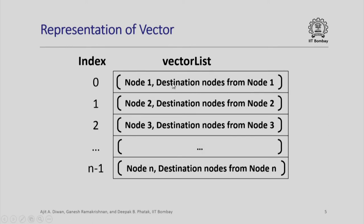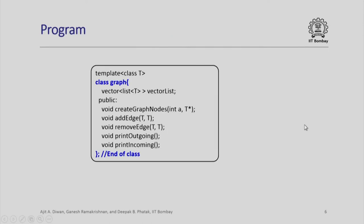Now, what should be contained in each list is very important. Each list will have first the source node identity. If we have n nodes it makes sense to include node 1, node 2, node 3 and so on in sequence, indexed by 0, 1, 2, 3 up to n minus 1. This shall be the first entry in each vector list, followed by a list of destination nodes for which the edges emanate from that node. You can very clearly see that this represents the entire graph completely.